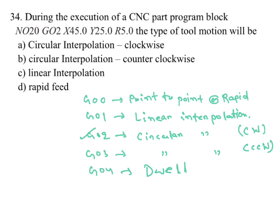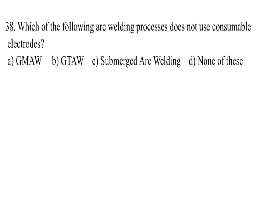Which of the following arc welding processes does not use consumable electrodes? It is TIG welding — gas tungsten arc welding. B is the answer.